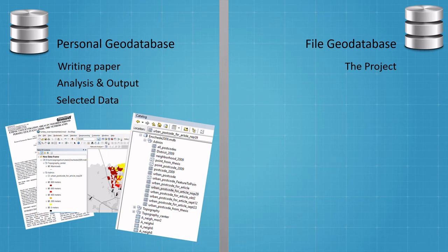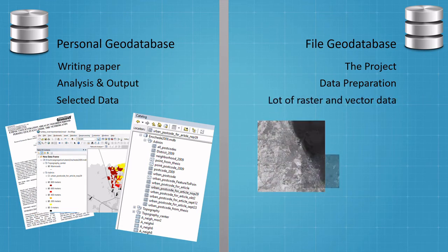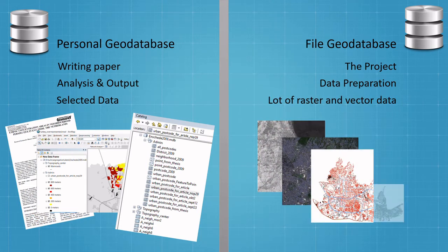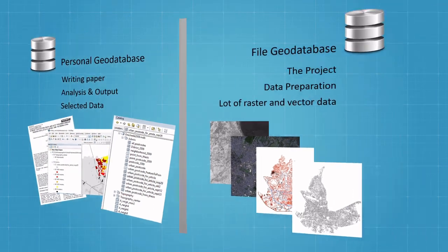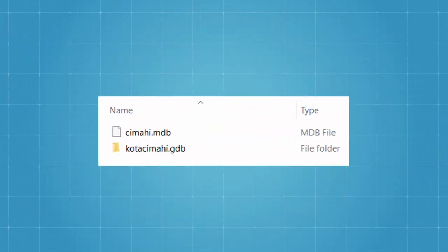However, in my project, I usually have a bunch of raw data — raster or vector — which needs to be prepared or cleaned. To share with your colleagues, you can find personal geodatabase in one MDB file, while file geodatabase is in one folder.